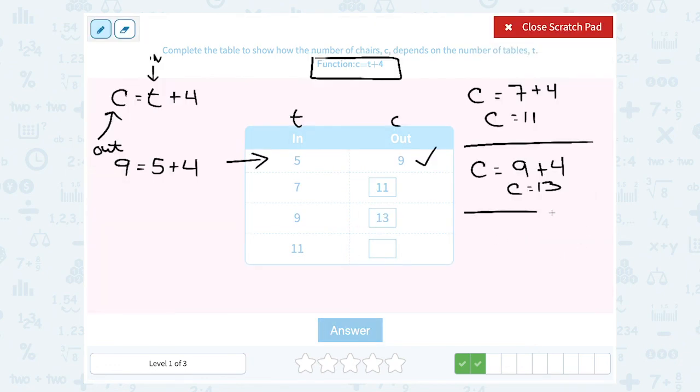And then we have one more row in our table. We want to know when t is 11, what do we get out for c? So c is equal to, we're going to put in 11 in place of t, so 11 plus 4. And we're just going to add that up. 11 plus 4 gives us 15, or we get out 15 for c.